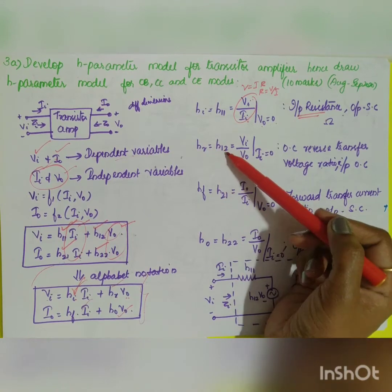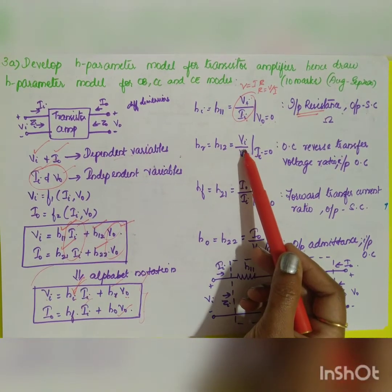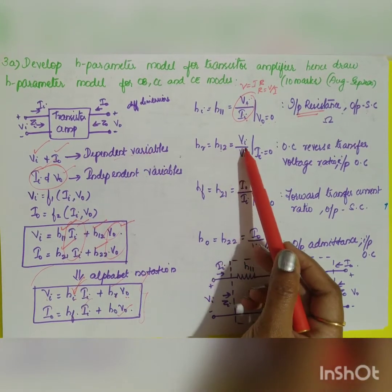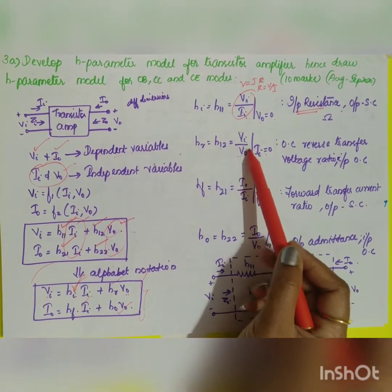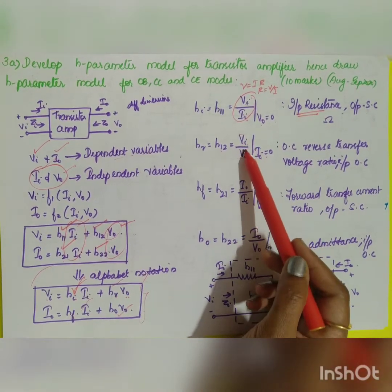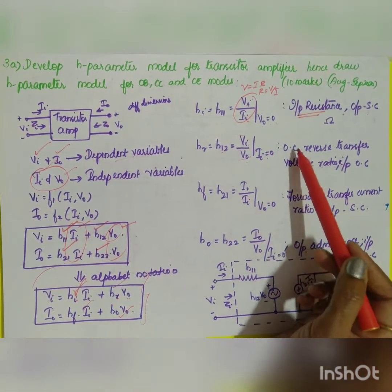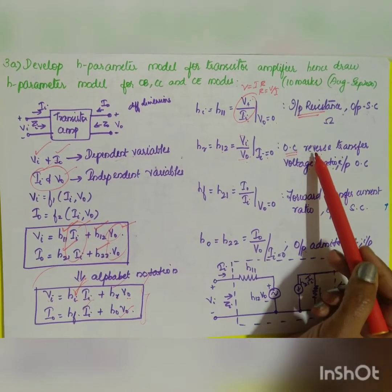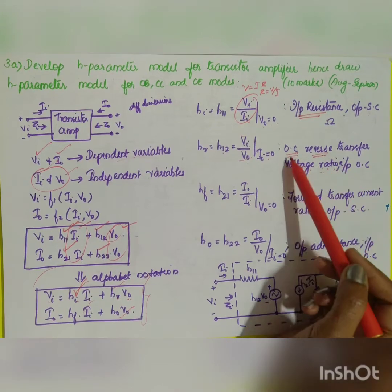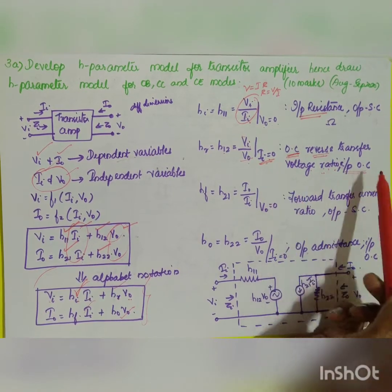hr = h12 = Vi/Vout with Ii = 0. Both are voltage parameters. Since it is Vi divided by Vout (reverse direction), it is called the reverse transfer voltage ratio. The condition Ii = 0 means the input is open-circuited.